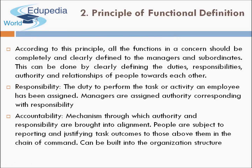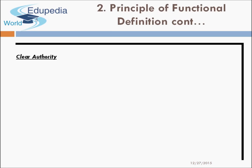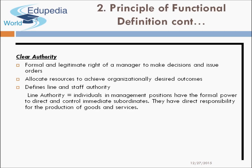Responsibility, authority, and accountability are three key concepts. When a task is assigned to a person, they become responsible and accountable for it — the work must be performed by that person. The organization must also give that person some authority to take decisions related to that work. The principle of functional definition stresses that clear authority and clear task responsibility must be given to avoid ambiguity. Authority is the formal and legitimate right of a manager to make decisions and issue orders.